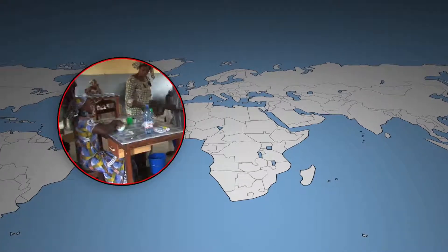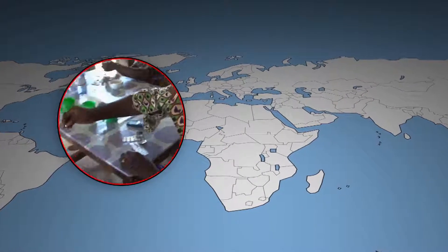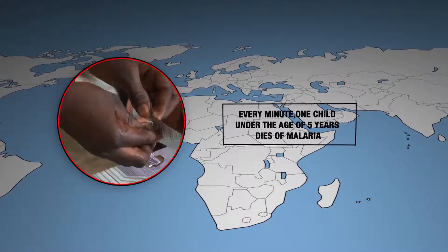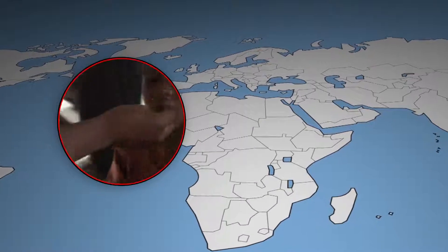Even if the number of children becoming infected has also been halved, they are still the main victims. Every minute, one child under the age of 5 years dies of malaria.